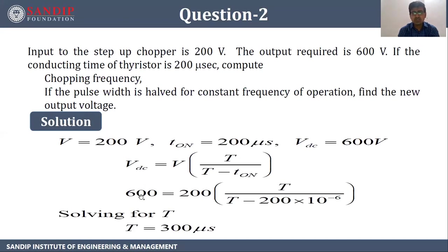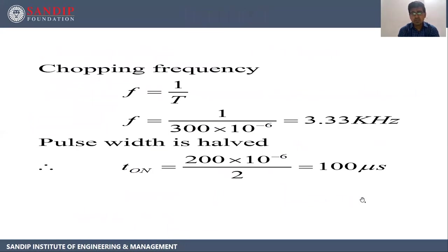So VDC is 600, V is 200, and we have to find T. Substituting T_on as 200 microseconds, we get T as 300 microseconds. Now the chopping frequency F equals 1 by T. Since T is 300 microseconds, F equals 1 by 300 into 10 raised to power minus 6, which equals 3.33 kilohertz.